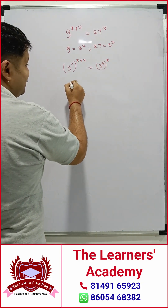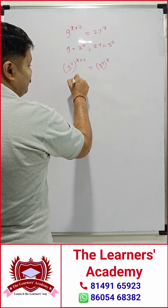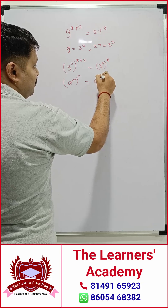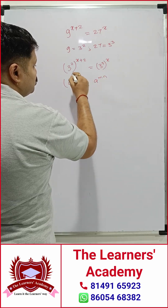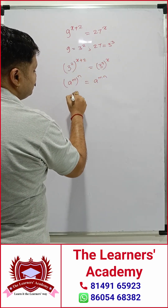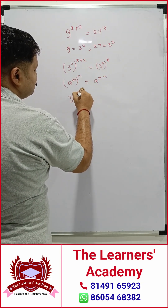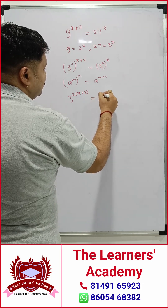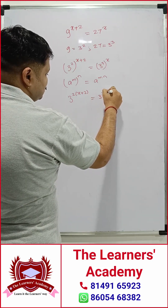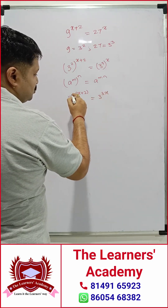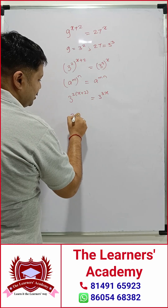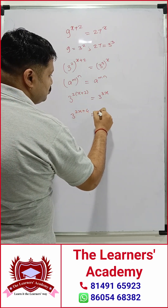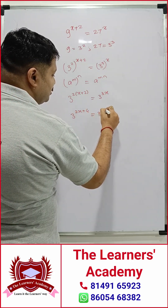Now we use the identity: a to the power of m, the whole thing to the power of n, is equal to a to the power of m times n. So here it would be 3 to the power of 2 times (x plus 2) is equal to 3 to the power of 3x, which further gives us 3 to the power of 2x plus 4 is equal to 3 to the power of 3x.